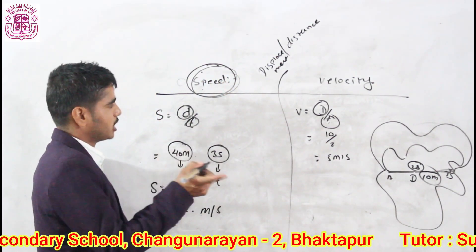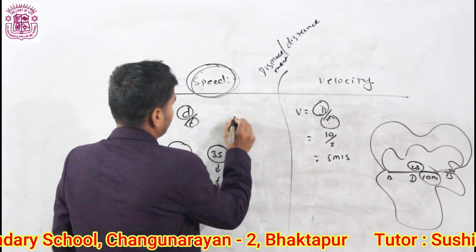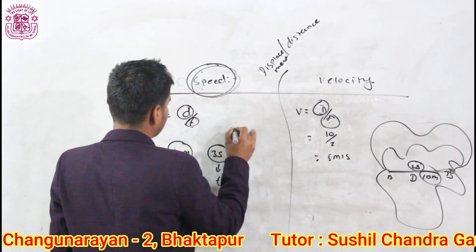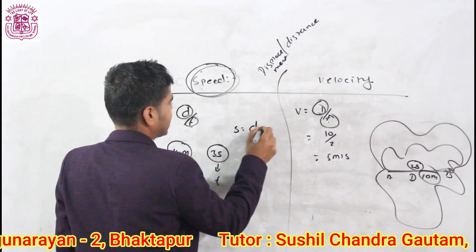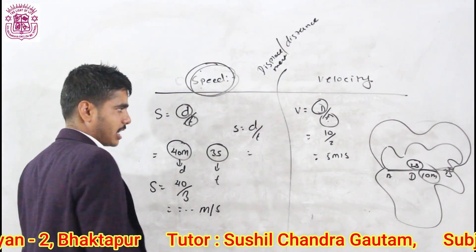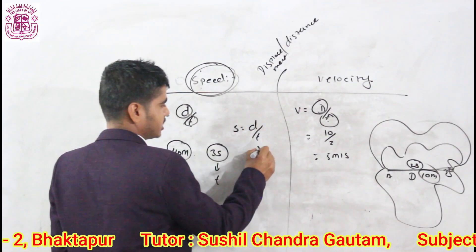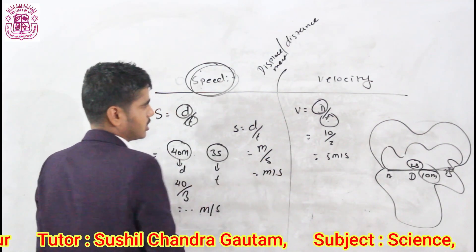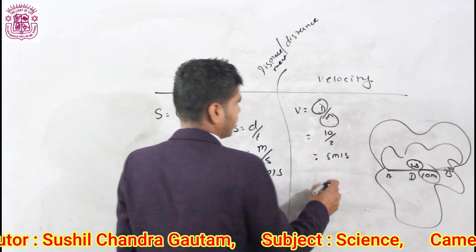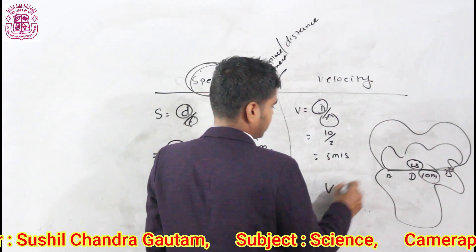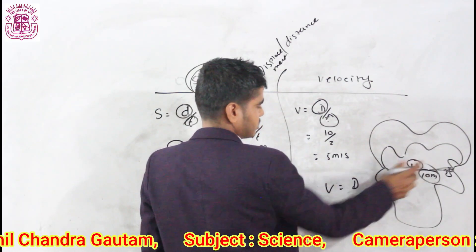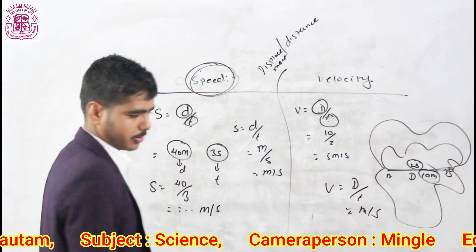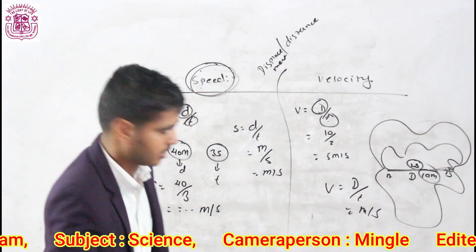Both speed and velocity have the unit meters per second. Speed equals distance divided by time — the unit of distance is meter, the unit of time is second, so the unit is meter per second. Similarly for velocity: displacement is also measured in meters, time in seconds, so the unit is also meter per second.